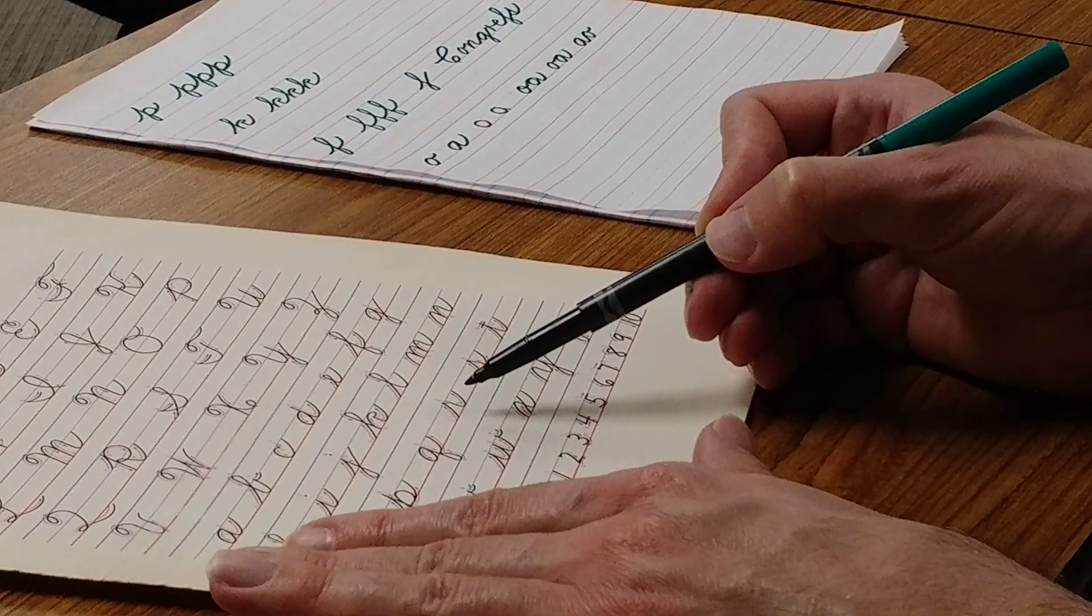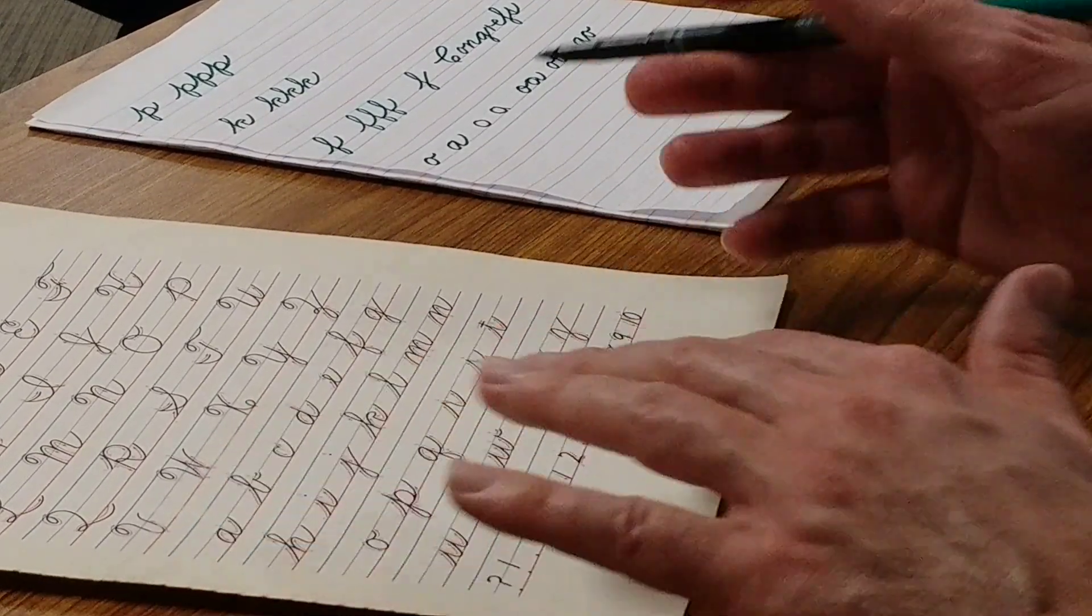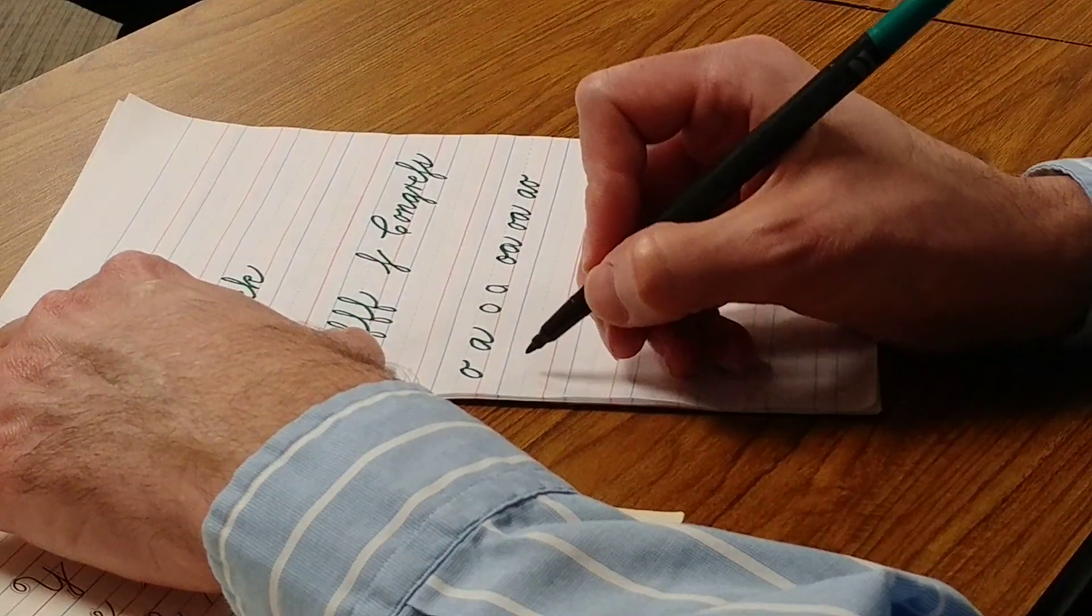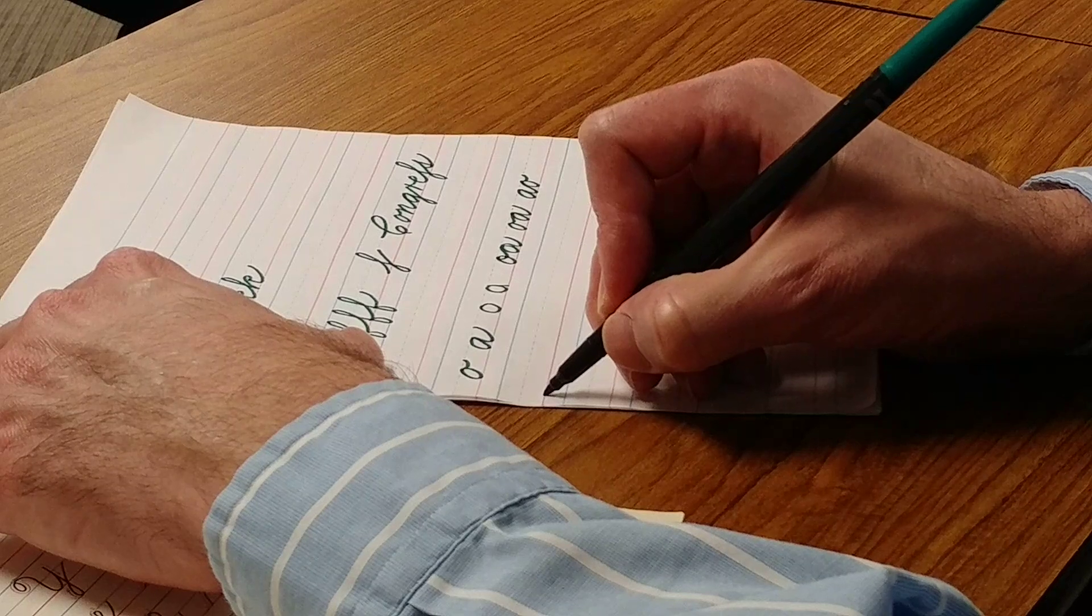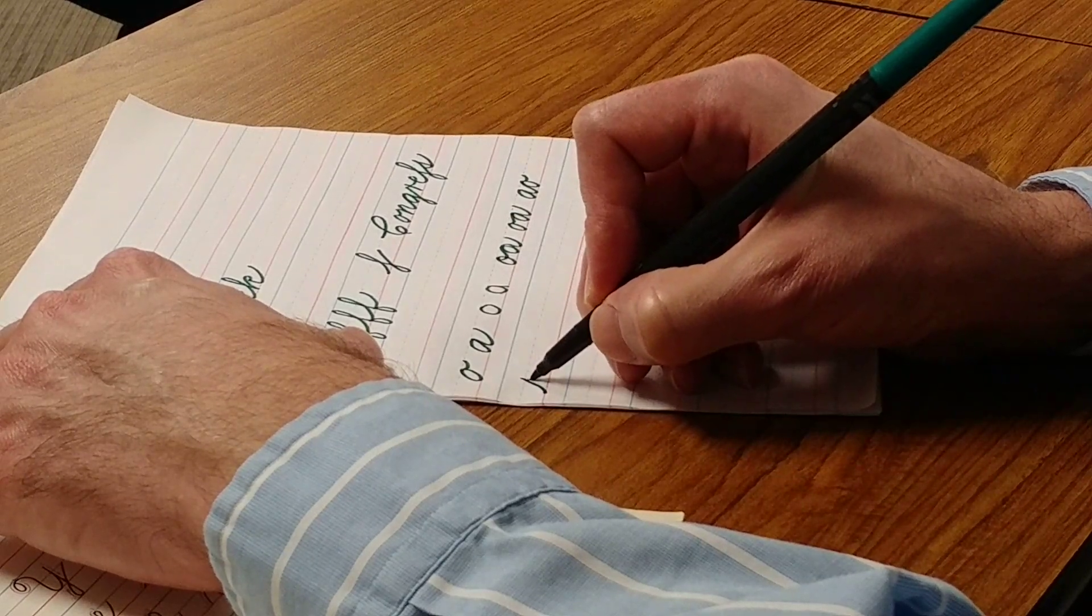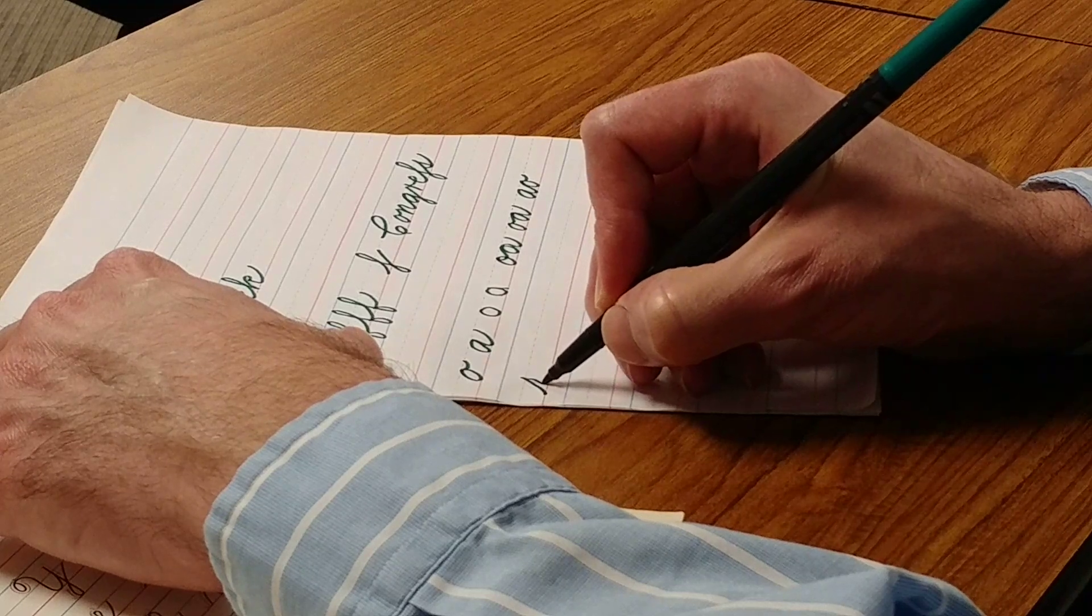So that's how you make it if the word begins with an r. For instance, if I'm writing the word read, I'll start here at the baseline. Slightly past the midline, retrace, slope to the right, slant to the base.